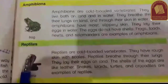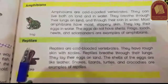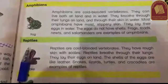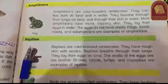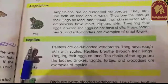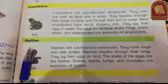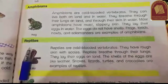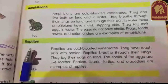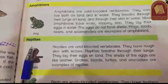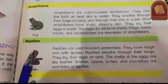Next are reptiles. Reptiles are also cold-blooded vertebrates whose body temperature changes with the environment. Their skin is rough and covered with scales. Examples we have learned include snakes, lizards, and turtles.